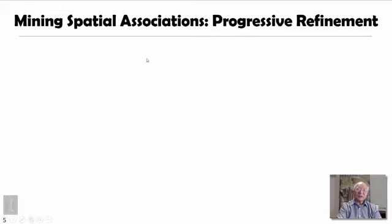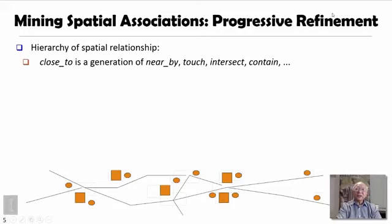In spatial association mining, there's an interesting heuristic called progressive refinement. The general philosophy is this: for a spatial relationship, there are some rough ones, like close to,